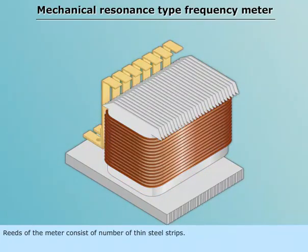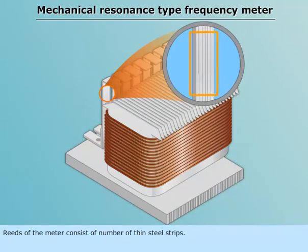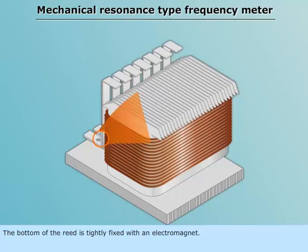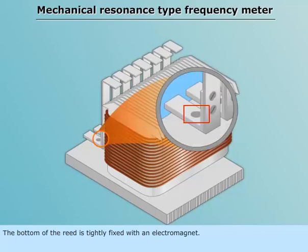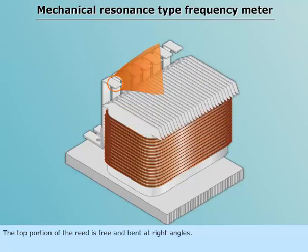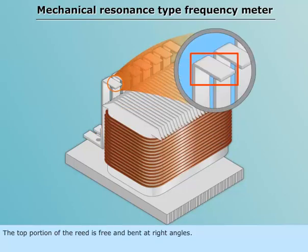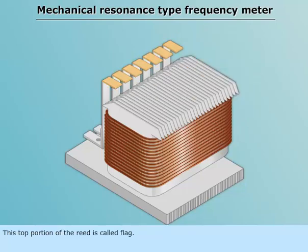Reeds of the meter consist of a number of thin steel strips. The bottom of the reed is tightly fixed with an electromagnet. The top portion of the reed is free and bent at right angles. This top portion of the reed is called flag.